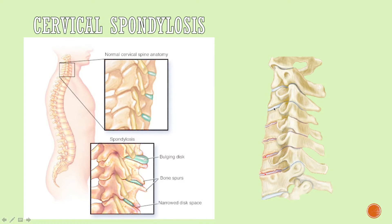In the image showing degenerative changes, the disc has narrowed compared to normal, the smooth structure of the vertebral bodies has become irregular — called spurring — and the anterior margin of the vertebra has protruded into a thorn-like structure. That is the formation of osteophytes, which we have covered in previous videos.